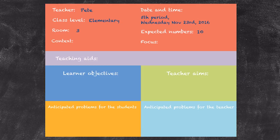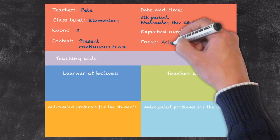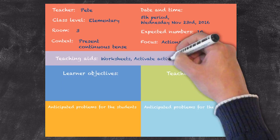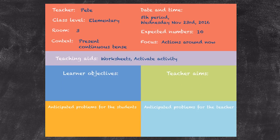The context of the lesson for this class is going to be the present continuous tense, and it may well be the first time that this particular level of class has been introduced to this tense. So our focus is going to be fairly general, looking at actions that are happening around now. Teaching aids is basically anything we bring to the lesson to help us teach it — in our study phase we'll be using worksheets, and during the activate phase we'll be doing an activate activity.